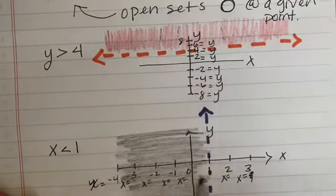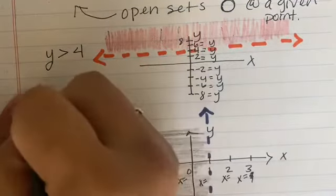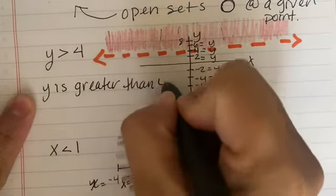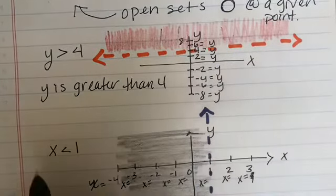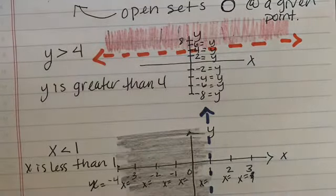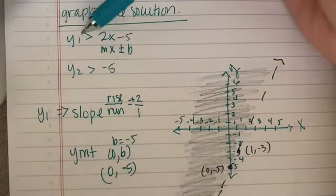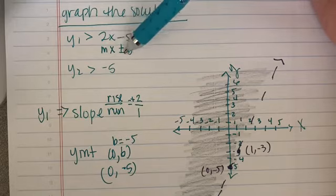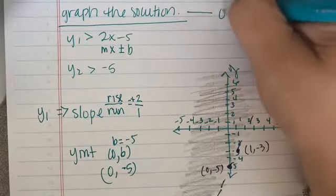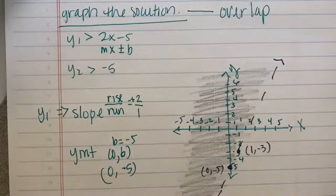So to review: Y is greater than 4, and X is less than 1. Now for this problem, we want to graph the solution. Y1 is greater than 2X minus 5 — this is MX plus or minus B form — and Y2 is greater than negative 5. Graph the solution, which is going to be the overlap where the two shadings blend together.